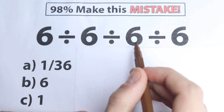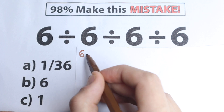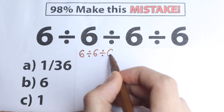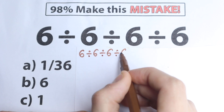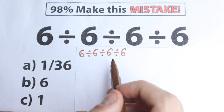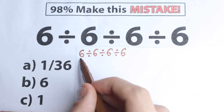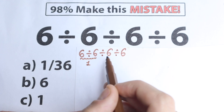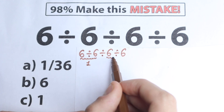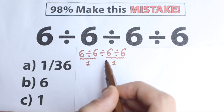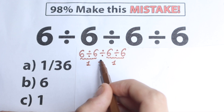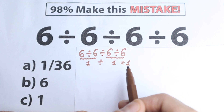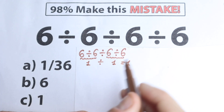6 divided by 6 divided by 6 divided by 6. Let's rewrite this question. First I want to show the solution that a lot of students use — I'm not saying yet if it's correct or incorrect. They say: 6 divided by 6 equals 1, and on the right-hand side 6 divided by 6 also equals 1, and then with the division in the middle we have 1 divided by 1 equals 1. If you look at the options, this is option C.